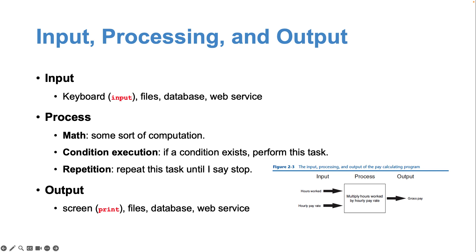Processing could refer to some sort of computation. For example, if our input is two and three and our process is addition, the output is going to be five. It could also be a conditional execution — checking a condition and performing different tasks depending on whether the condition is true or not — or it could be a repetition format, doing a certain task over and over again.